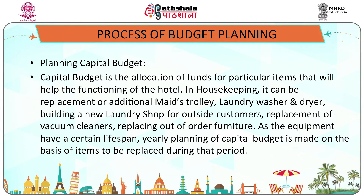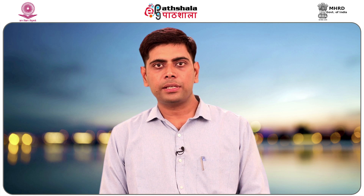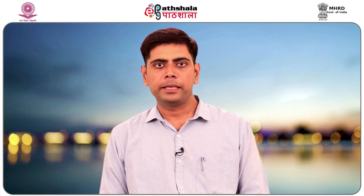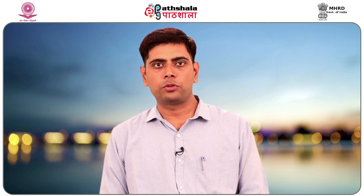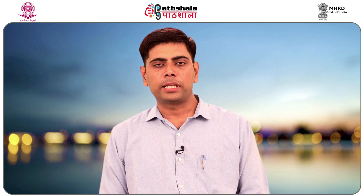Planning a capital budget involves allocation of funds for particular items that will help the functioning of the hotel. In housekeeping, this can include replacement or addition of maids' trolleys, laundry washer and dryer, building a new laundry shop for outside customers, replacement of vacuum cleaners, and replacing out-of-order furniture. As equipment has a certain lifespan, yearly planning of the capital budget is made based on items to be planned during that period.